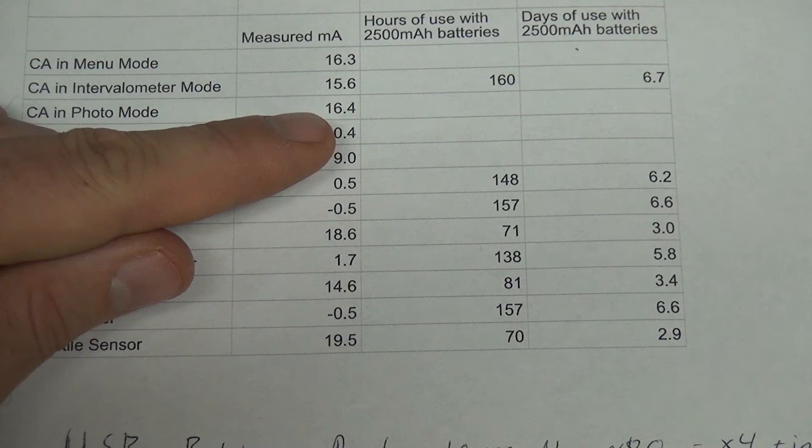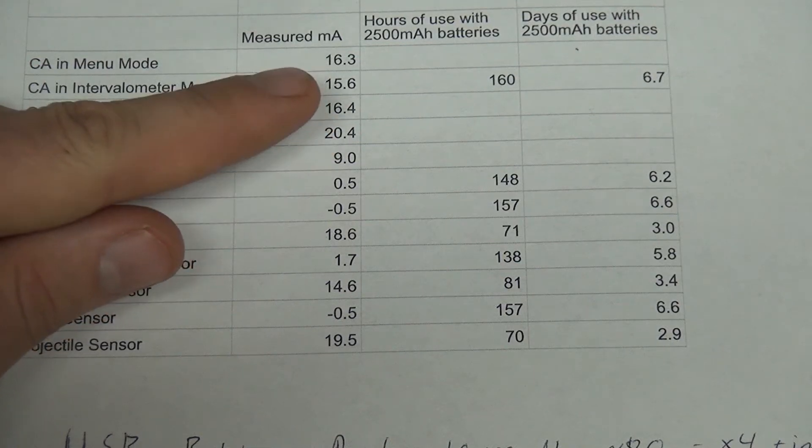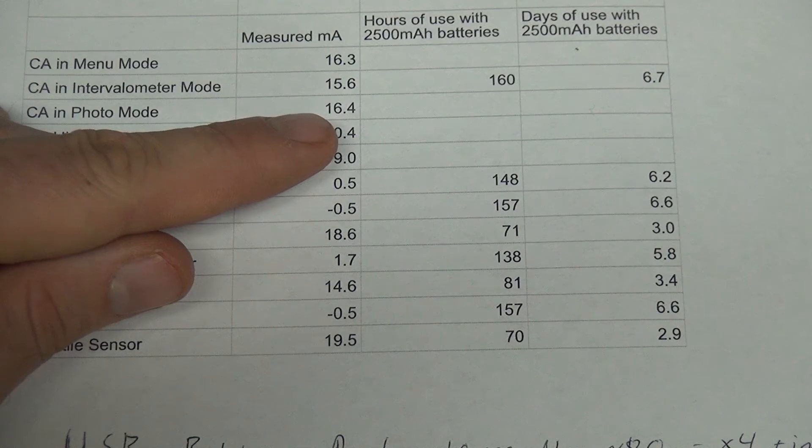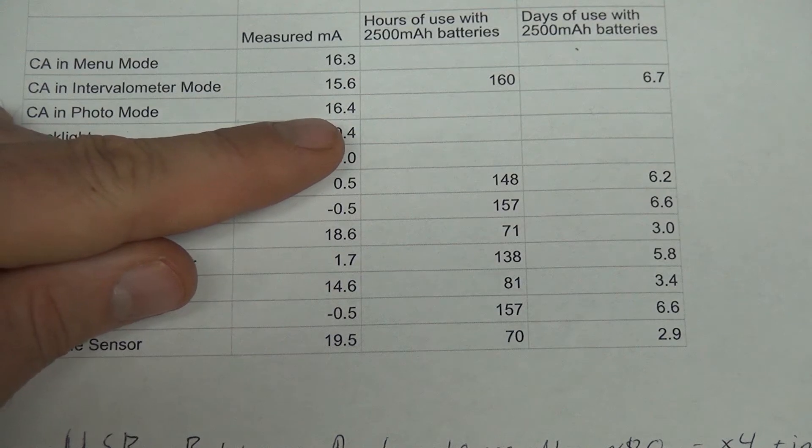In photo mode, you can see it consumes the most power, just slightly more than menu mode. That's because the way the Camera Axe works is it's trying to capture timing events as quickly as possible. It's in a very high energy state, really waiting for an event to happen so it can trigger your flash or your camera as quickly as possible. That's why the photo mode uses a lot of power here.